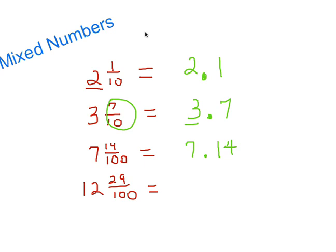This next one is also in the hundredths. We have twelve and twenty-nine hundredths. So I write my whole number twelve, then the decimal, then twenty-nine — the nine needs to be in the hundredths place, which is the second place to the right of the decimal. So that gives us twelve point two nine, or twelve and twenty-nine hundredths.